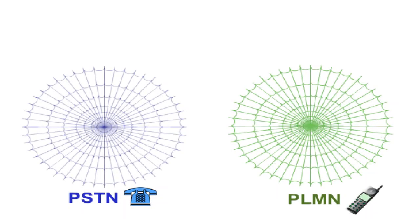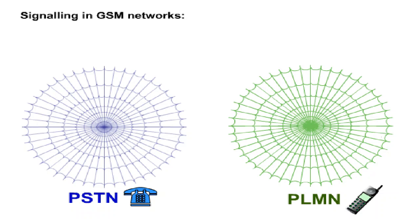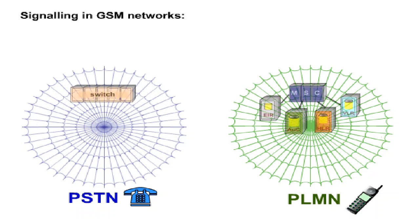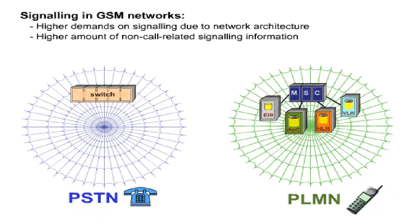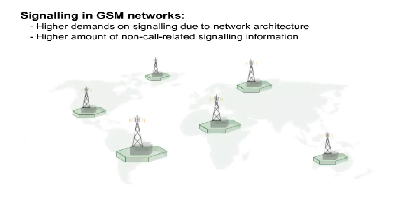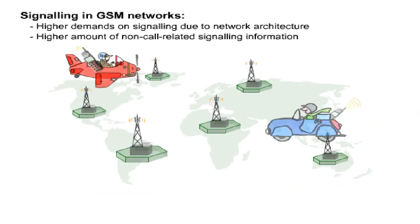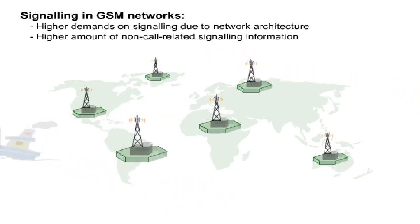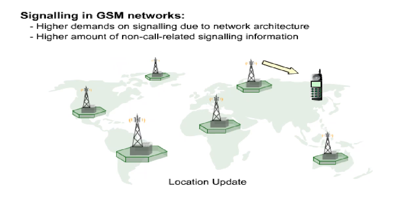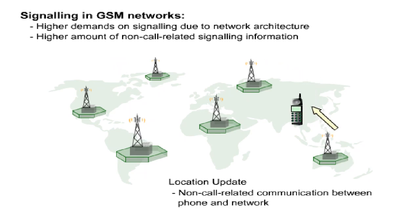In GSM networks, signalling is not as easy as in a fixed network. This is because, due to the network architecture, a digital mobile radio network makes much higher demands on signalling. GSM requires a considerably higher amount of non-correlated signalling information. After all, it must be considered that the GSM customer is mobile, in contrast to the user of a fixed network who telephones from a fixed device. Therefore, the mobile station must continuously be provided with localisation signals to enable the location update. The location update is an example of a non-call related communication between the phone and the network.